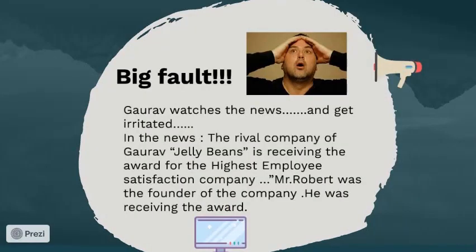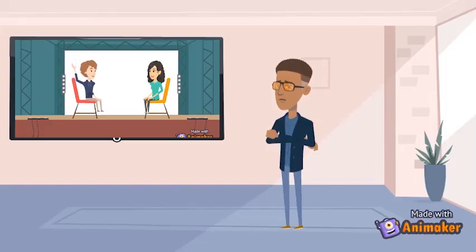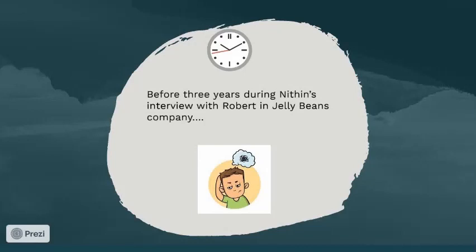Gaurav watches the news and gets irritated. The rival company of Gaurav, Jelly Beans, is receiving the award for the highest employee satisfaction company. Mr. Robert was the founder of the company and was receiving the award. How do you feel right now? Are you happy? Thank you all. I am happy when my employees are happy. All the credit goes to the employees of my company, especially to our head of the functional team, Mr. Nitin. Before three years, during Nitin's interview with Robert at Jelly Beans company.